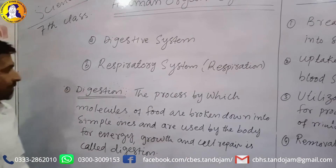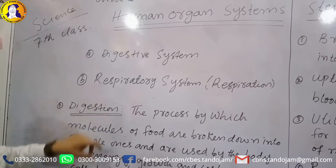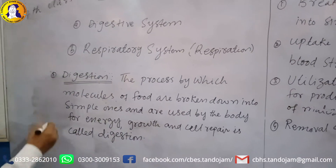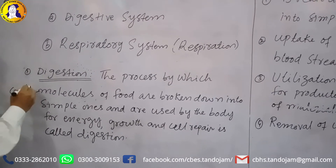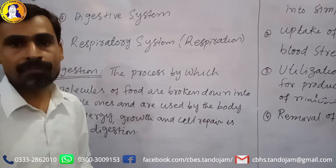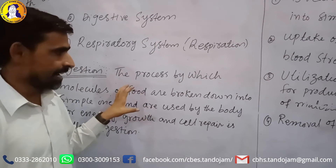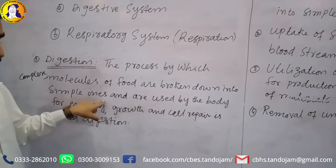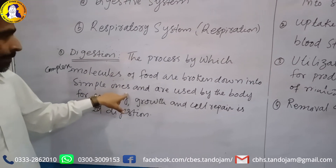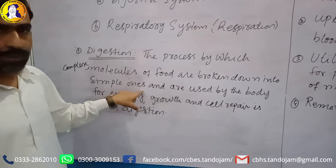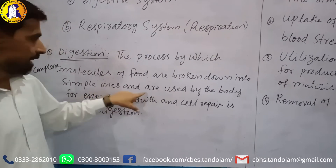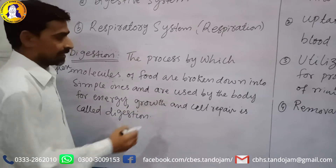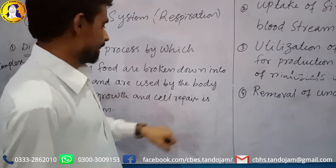In the digestive system, first we have to define what digestion is. Digestion is the process by which complex molecules of food — carbohydrates, proteins, and fats — are broken down into simple units: amino acids, fatty acids, and glucose. These simple molecules are used by the body for energy, growth, and cell repair.